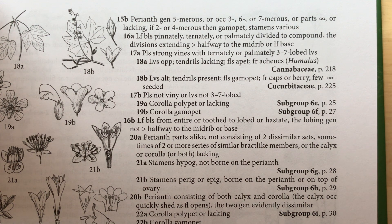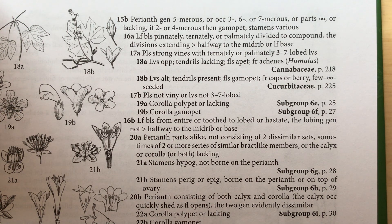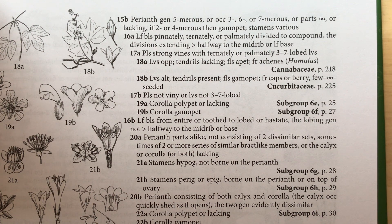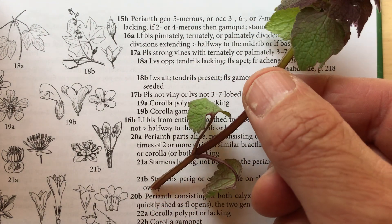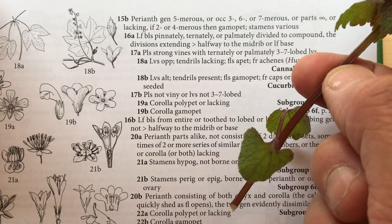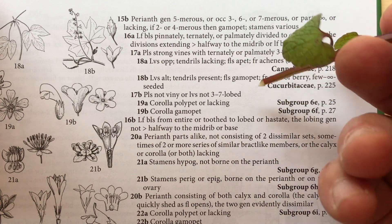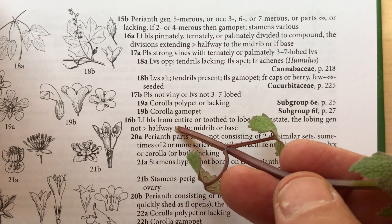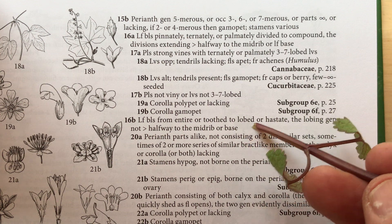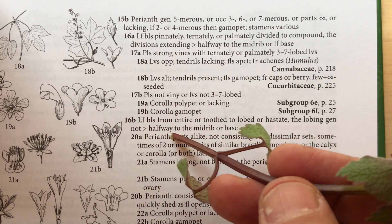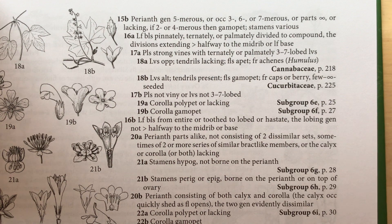So four parts numerous or lacking. 16a: leaf blades pinnately, ternately, or palmately divided into compound divisions extending greater than halfway to the midrib or leaf base. We don't like that, because in our plant we have leaves that are not divided at all — they're a little toothed at the end, but we would not call them divided. So we go to 16b: leaf blades from entire to toothed, lobed, or hastate, the lobing generally not greater than halfway to the midrib of the base.